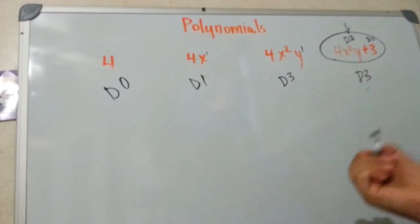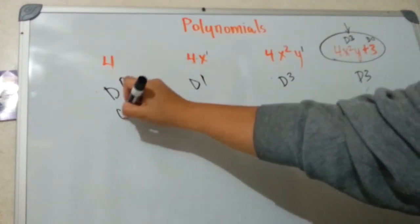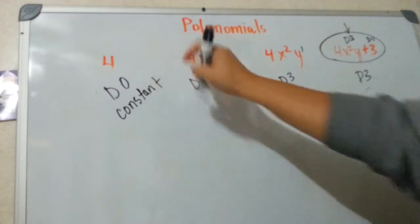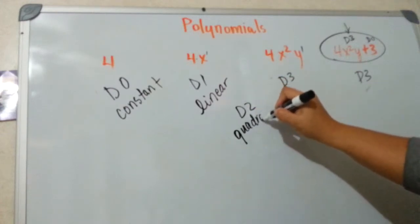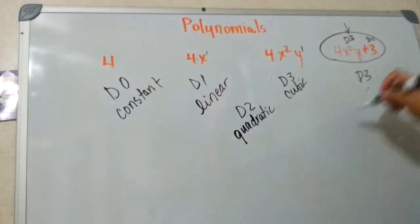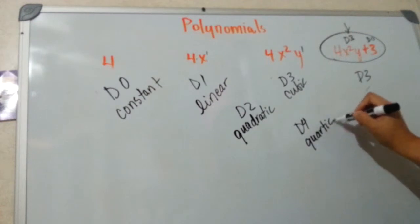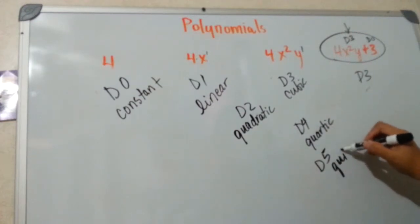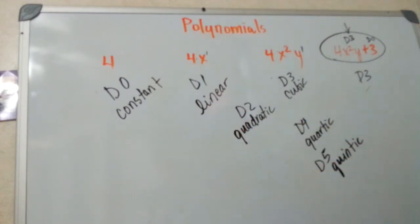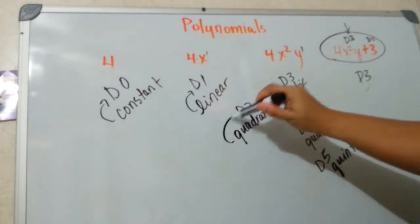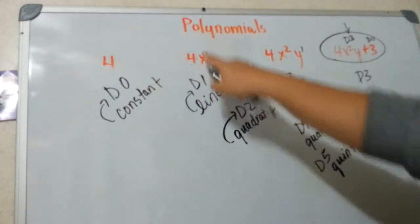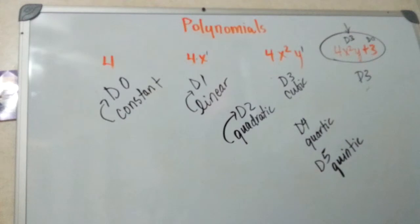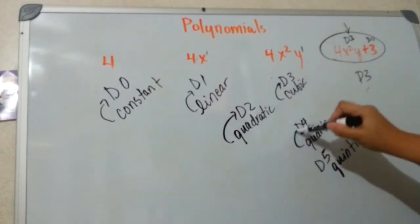Based upon the degree, you're going to be given a name. A degree zero polynomial is just called a constant. Degree one means that you're linear. Degree two means that you are a quadratic function. Degree three means you're a cubic function. Degree four means you're a quartic function. Degree five means you're quintic. These classifications come from the degree, not from the number of terms. Both of these have one term so they're both monomials, but this one is a constant and this one is linear. This one is cubic, even though it's also a monomial.